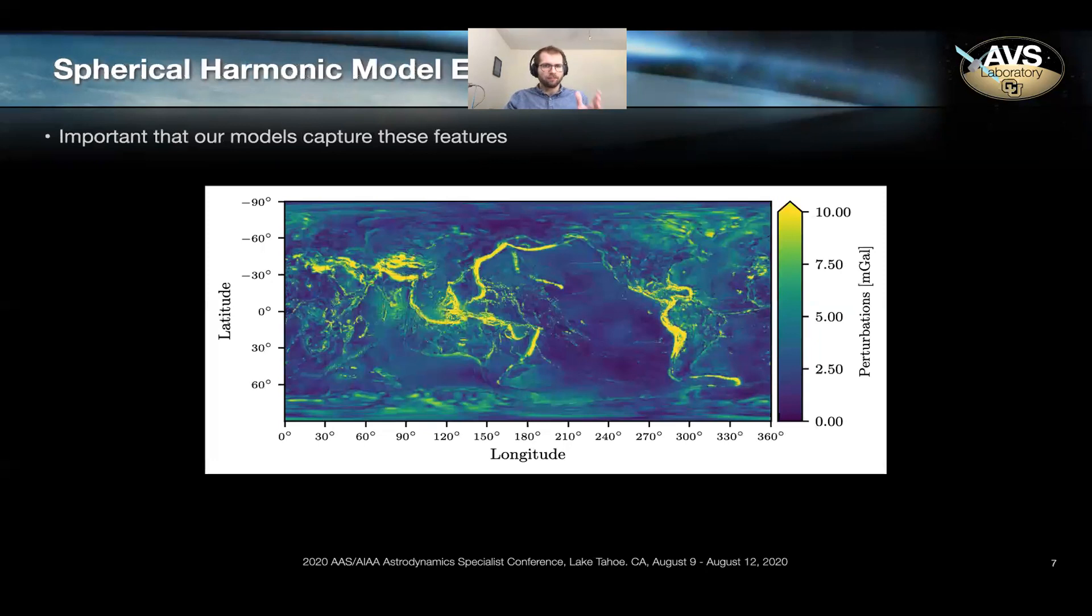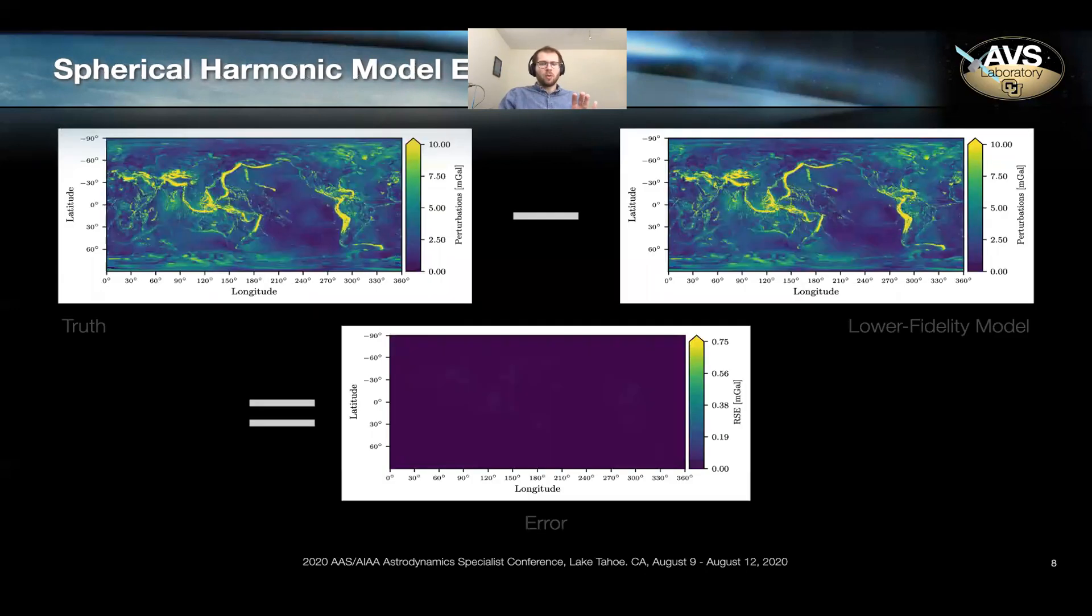So we return to spherical harmonics. How well do they represent these dominant perturbations beyond J two? In order to investigate this, we subtract the true model over on the left from a lower fidelity model on the right. And ideally, if spherical harmonic captures it perfectly, you'd expect the difference, the root squared error difference between these two maps to be homogenous and at zero.